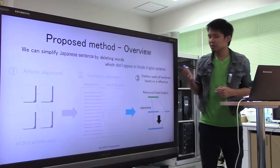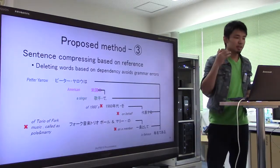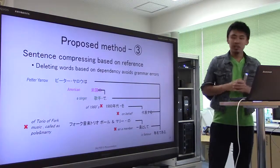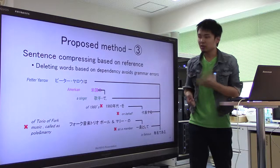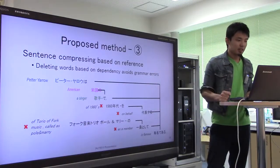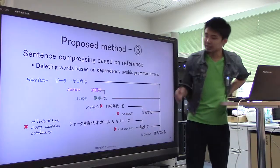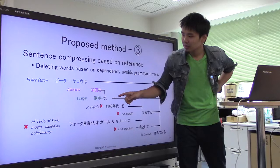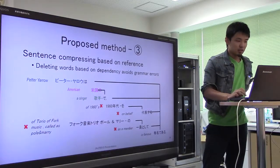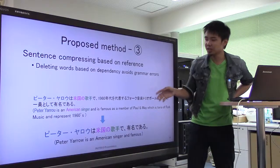Next, I would like to talk about the deletion part of a sentence based on the reference. In this process, we compress the sentences based on the reference contents. We delete words based on the dependency structure, because by using the dependency structure we can avoid grammatical errors. First, we parse the Japanese sentences, and only retain Japanese words which appeared in Simple English sentences. Finally, we get the simplified Japanese sentence from the original complicated Japanese sentence.